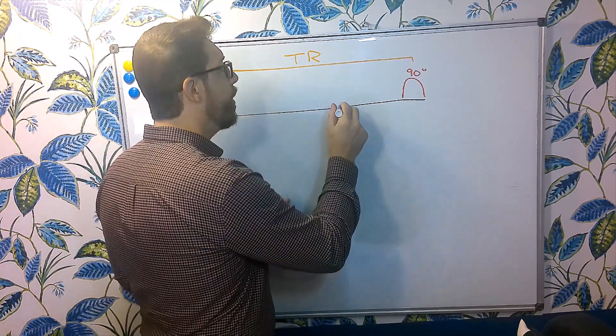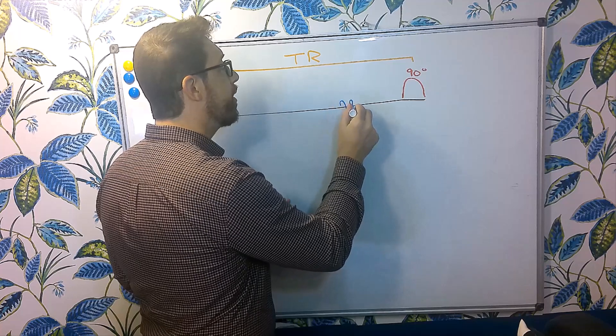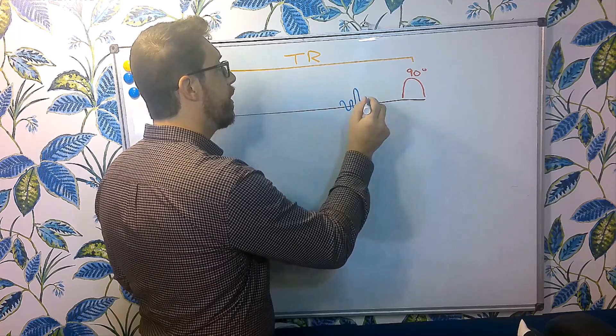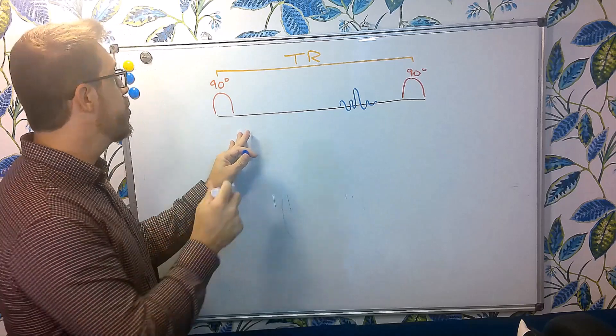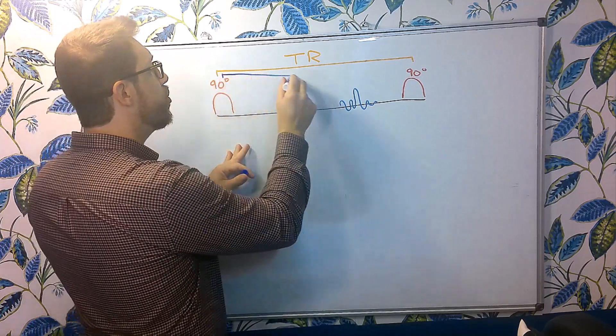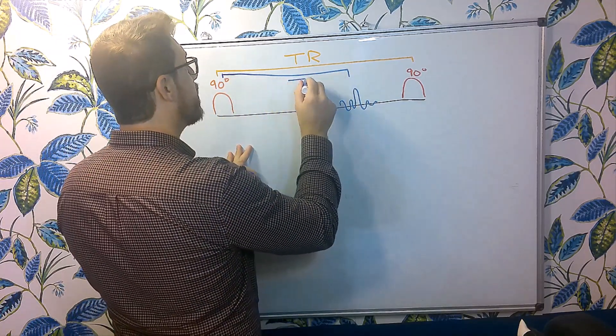Now if I go ahead and put an echo in here, the time from our excitation pulse to our echo is called TE.